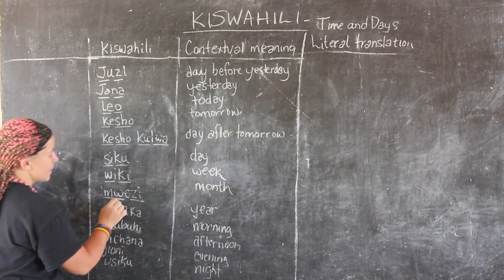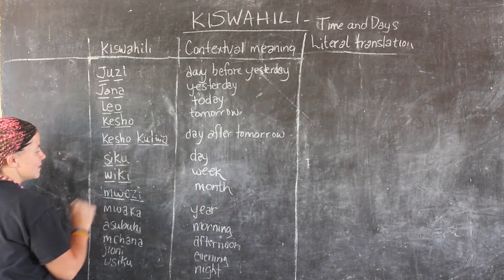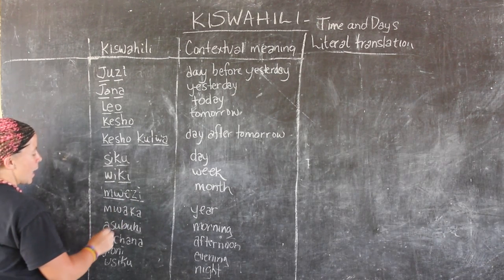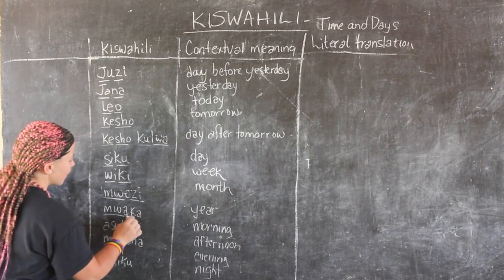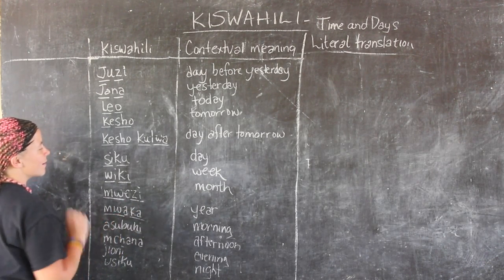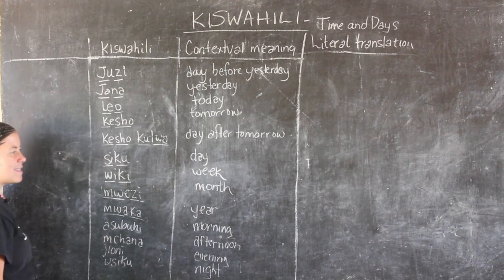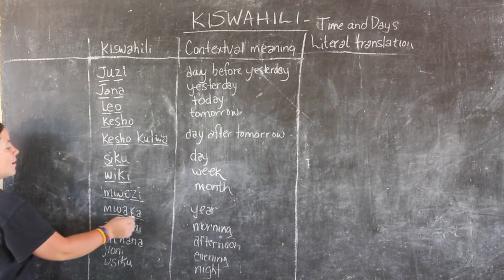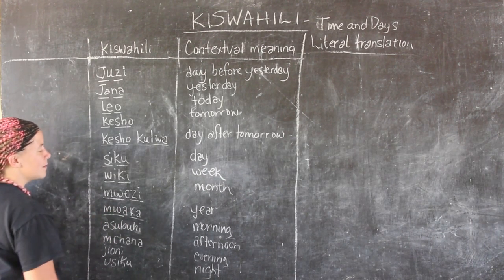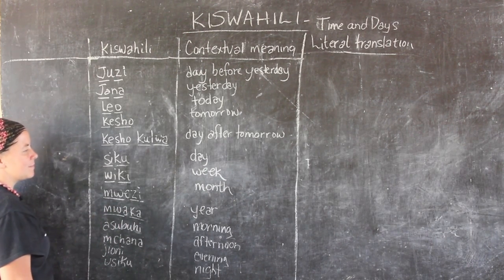Mwezi means month. Mwaka means year — emphasis on the 'mwa': mwaka.